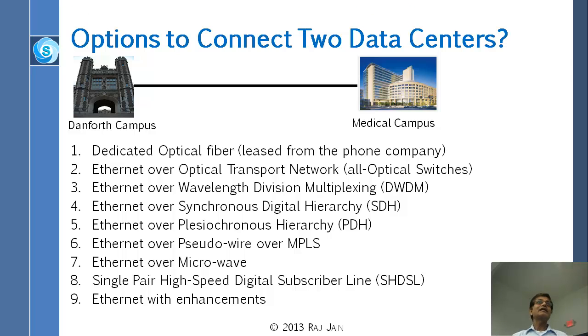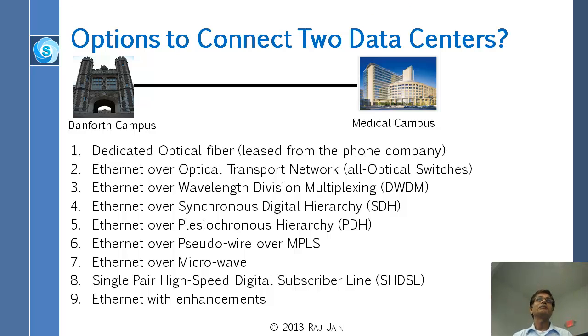The third thing you can get is a wavelength. You say, well, I don't need the whole fiber, but give me one of those 20 wavelengths on that fiber — one color. So other customers can use the same fiber, and you pay less.